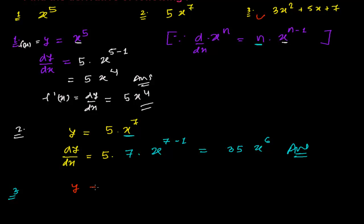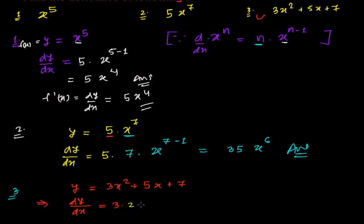Now let's find the derivative of the third one. y equals 3x squared plus 5x plus 7. So dy/dx: I'm going to apply the power rule directly to each term. The coefficient 3 stays, then power rule gives 2 times x to the power 2 minus 1. For 5x, the coefficient 5 stays, and the power is 1, so 1 times x to the power 1 minus 1.